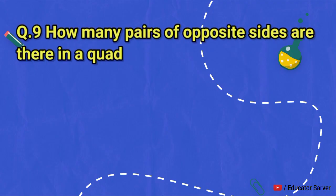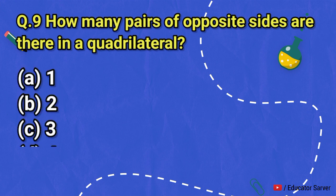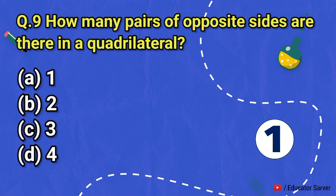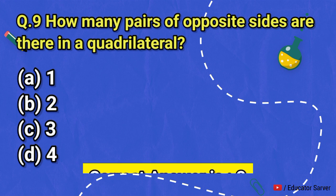Question number nine: how many pairs of opposite sides are there in a quadrilateral? Options are one, two, three, and four. The right answer is two.